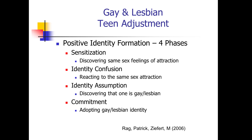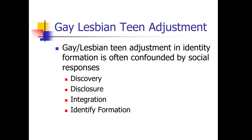In gay and lesbian adjustment, positive identity formation has been described as four phases. The sensitization phase includes discovering same-sex feelings of attraction. Identity confusion is the reaction to the same-sex attraction, which can commonly occur. Identity assumption is discovering that one is gay or lesbian. And commitment is the adoption of a gay or lesbian identity. Identity formation is also confounded by social responses in discovery, disclosure, integration, and finally, identity formation.